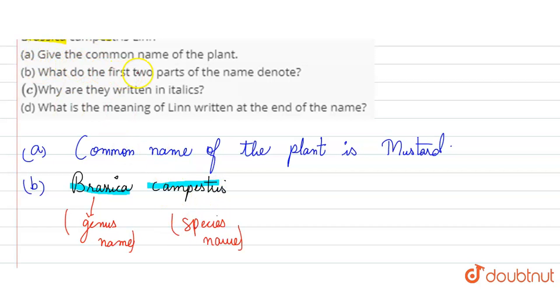So, the first two parts of the name denote genus name and species name. Genus name starts with capitals and species name is small.